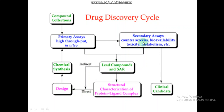Toxicity and metabolism are tested in animals, so this is called preclinical testing. After preclinical testing, if the lead compound fits all the criteria, it becomes a clinical candidate and we proceed to clinical testing, and finally to FDA approval.